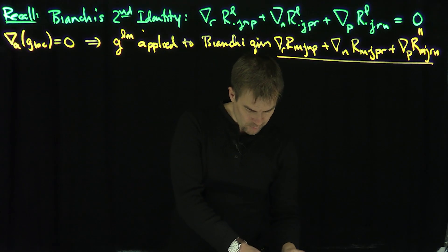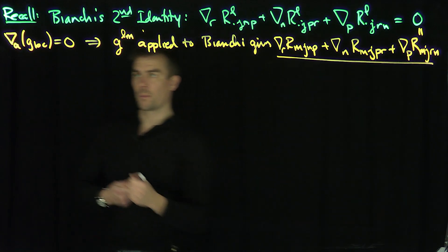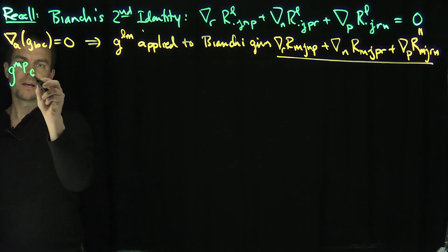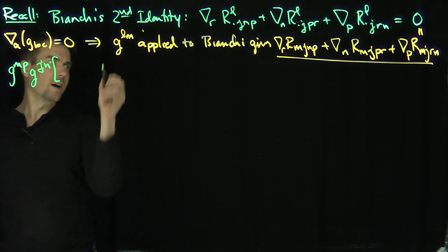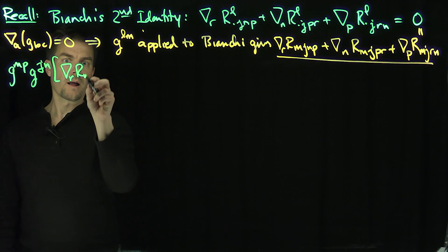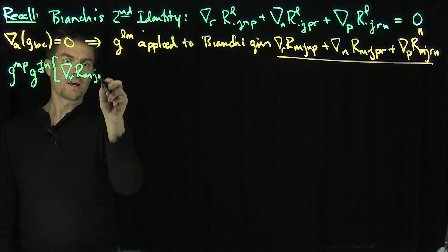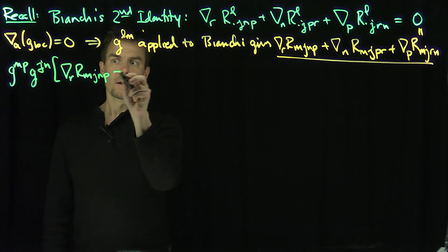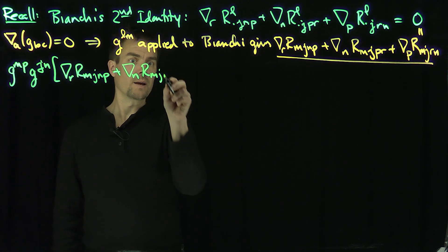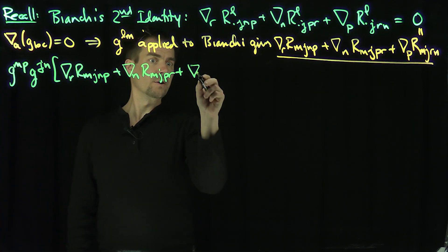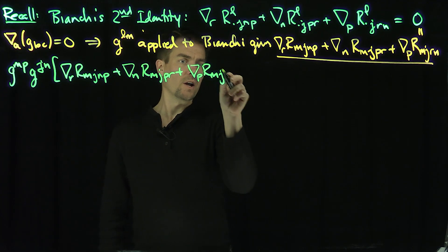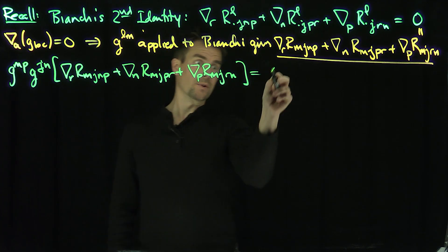Now we're going to do this again. By compatibility, we'll do one more iteration — I'm going to apply G^MP and G^JN to the second Bianchi identity. This gives: the R-covariant derivative of R_MJNP, plus the N-covariant derivative of R_MJPR, plus the P-covariant derivative of R_MJRN, all equal to zero.